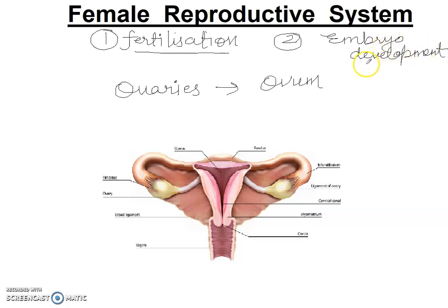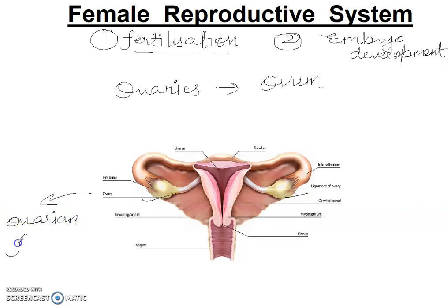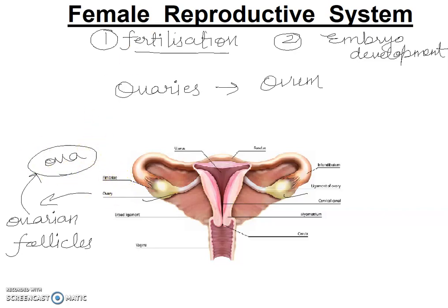Here is a pair of ovaries which are present in the abdominal cavity, near the kidneys. Each ovary contains thousands of developing ovarian follicles. In puberty, these follicles mature and produce ovarian follicles.